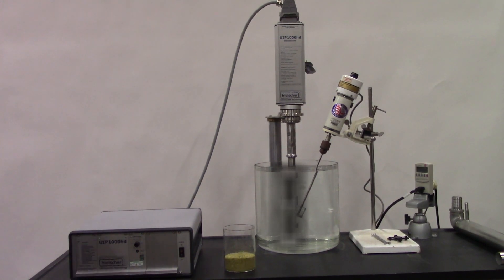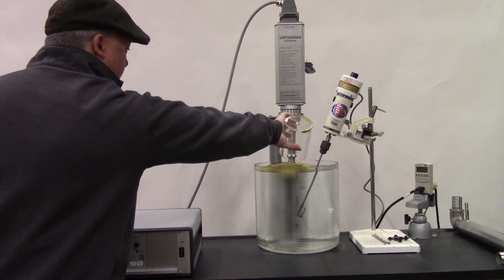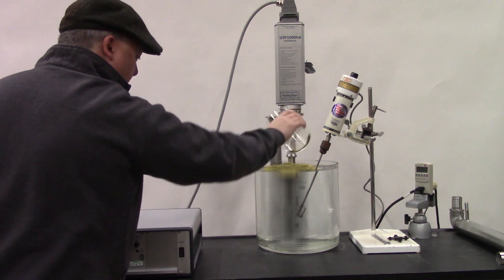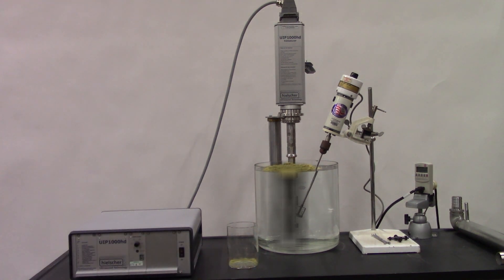Today at High Tech Trader, we're going to be looking at and demoing an extraction process. We're just going to add our hops in, our ground hops. We're going to be using a UIP-1000 HD generator and transducer setup from Heelsher Ultrasonics.